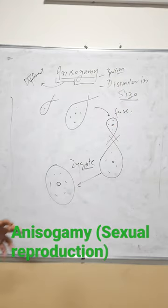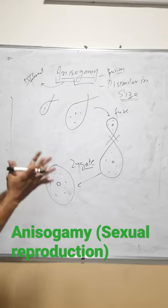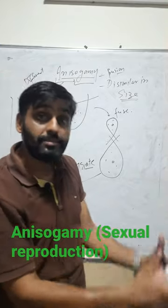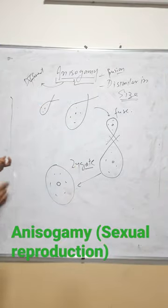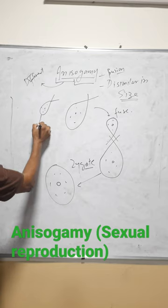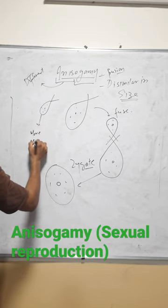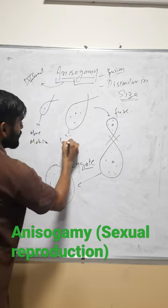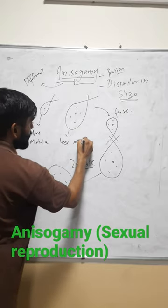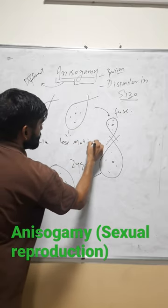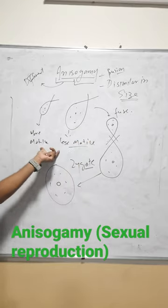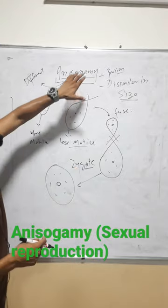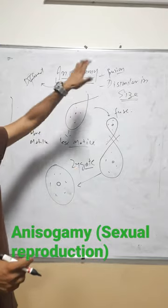The gametes differ in size: one is larger and less motile, and the other is smaller and more motile. When these two gametes fuse, this type of sexual reproduction is called anisogamy.